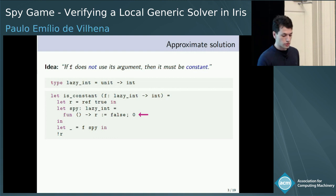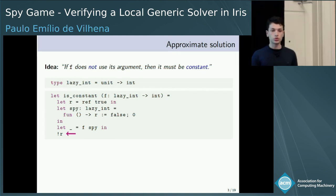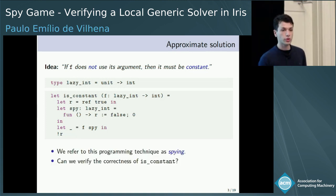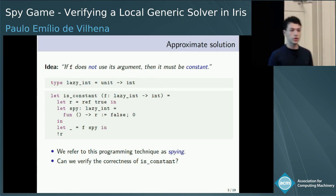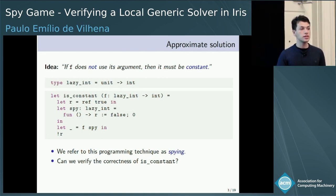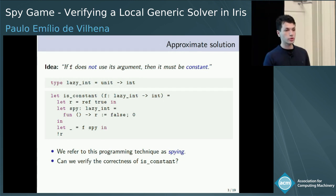Then we execute the program f applied to the lazy integer pi. Afterwards, we check the state of the reference r. If r is true, it means that the program f has never called its argument, and therefore it must be a constant function. The programming technique we use is what we call spying — because the lazy integer pi is disguised as the integer zero, but performs the observable effect of changing the state of the reference r.